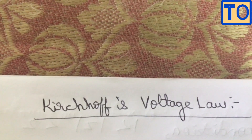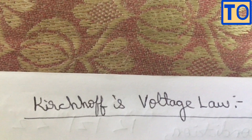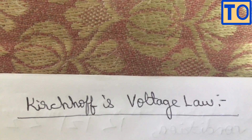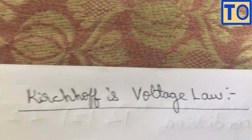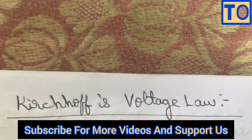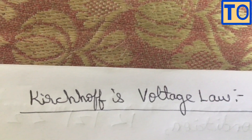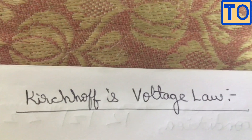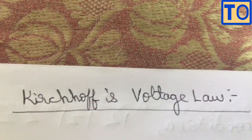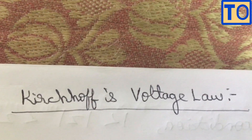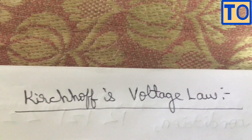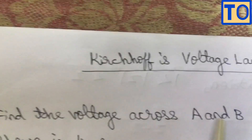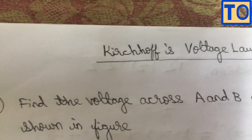Welcome to this video. How do you give a screen of chronology? These problems had been uploaded. There are no issues with the circuit. How did we solve the trigger? This is a shortcut method. If you look at the problem: find the voltage across A and B in the circuit shown in the figure.